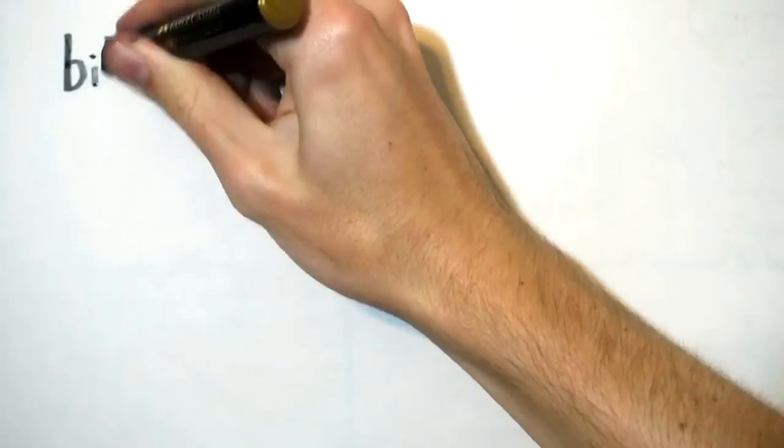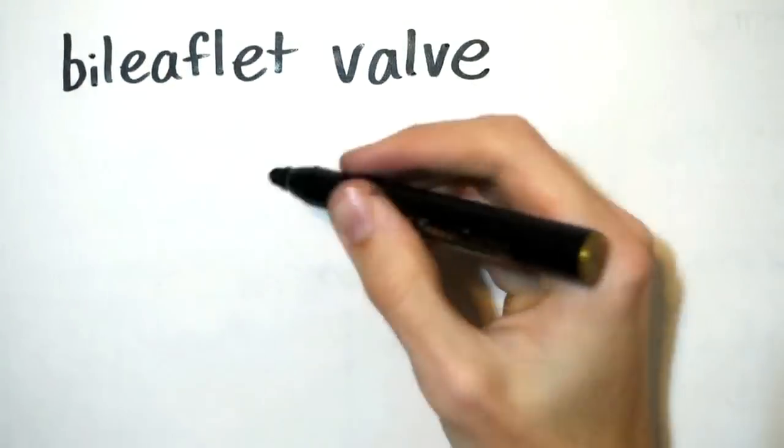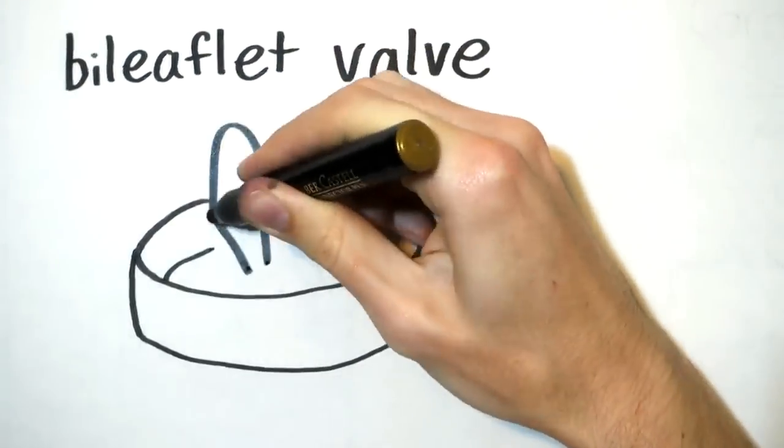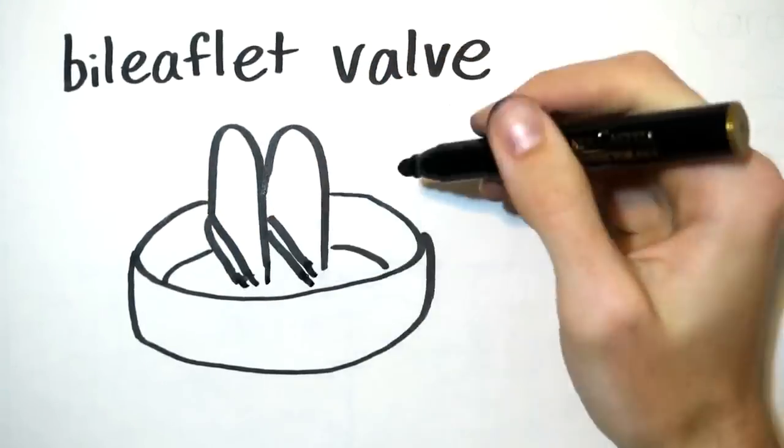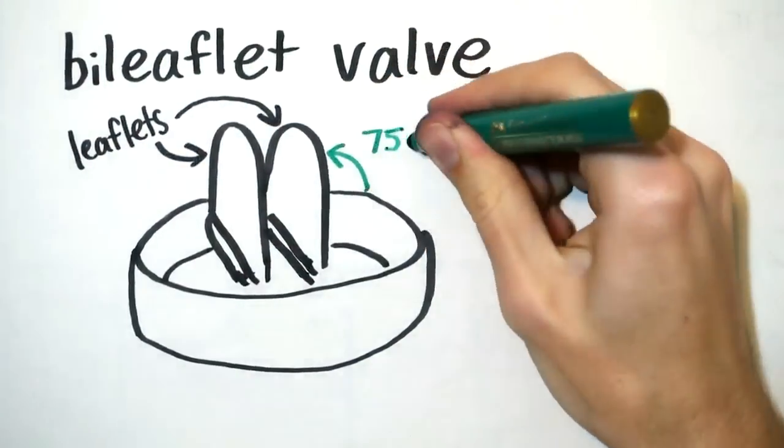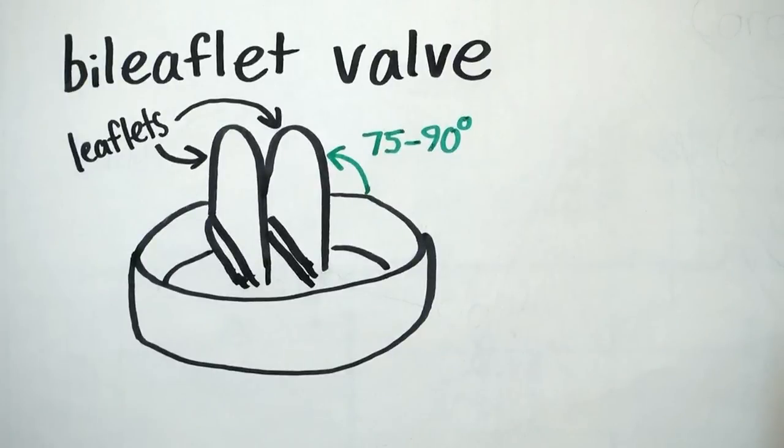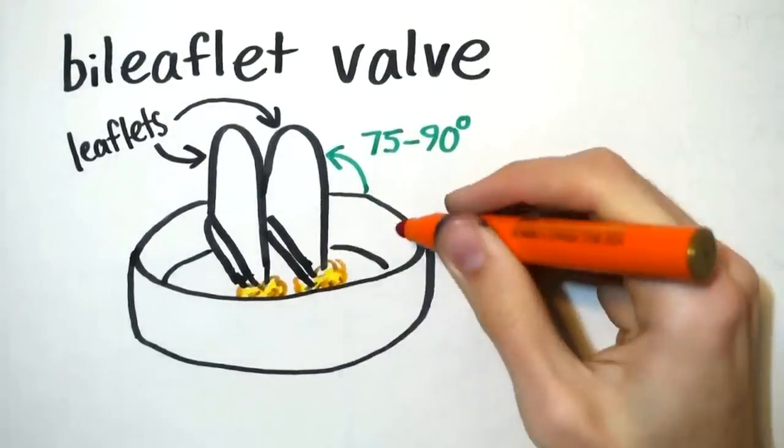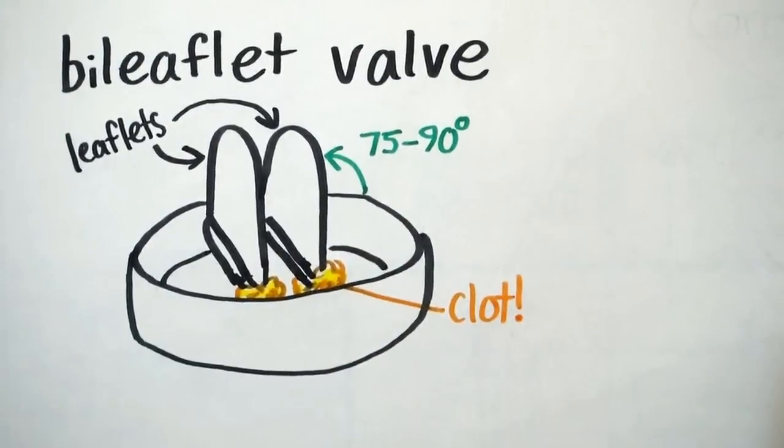The bileaflet valve is commonly chosen as a replacement for a damaged mitral valve. The valve is comprised of two semicircular structures called leaflets. In order for blood to pass through the valve, the leaflets rotate to the open position at an angle ranging from 75 to 90 degrees, providing a clear passage with minimal resistance. However, blood clots can form around their hinges, requiring patients to take blood-thinning medication like warfarin for the remainder of their lifetime.